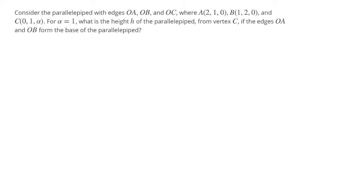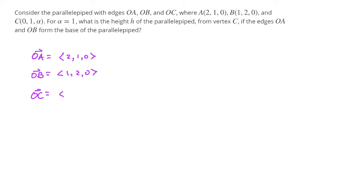We have vectors OA and OB. For OA, that's the position vector for point A, so that's going to be ⟨2, 1, 0⟩. Likewise, for vector OB, it's the position vector for point B, so that one is going to be ⟨1, 2, 0⟩. And for our third side OC, that will also be the position vector for point C, which is ⟨0, 1, 1⟩.